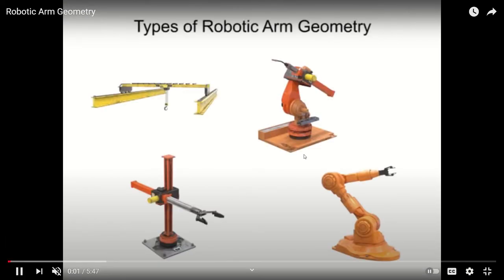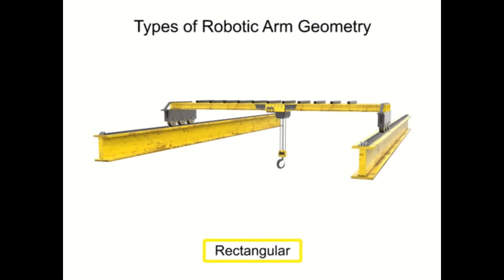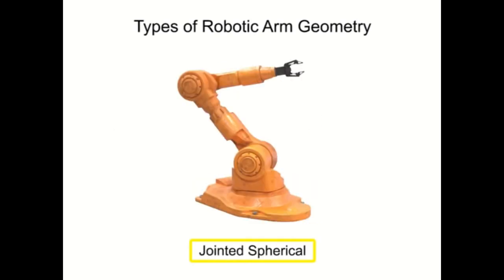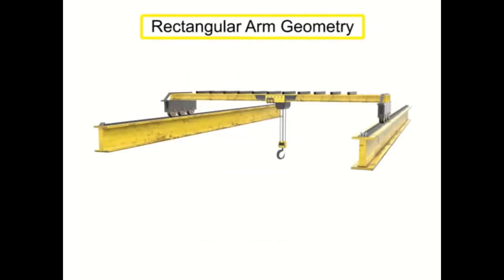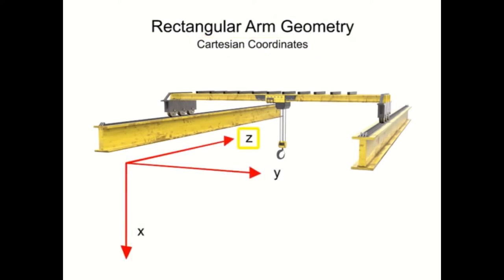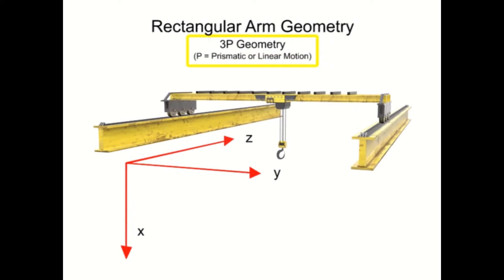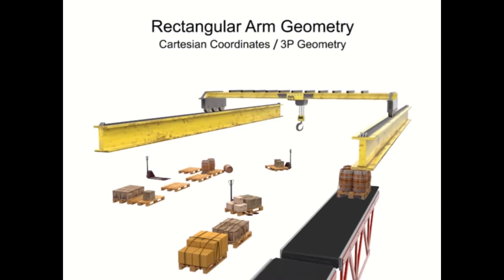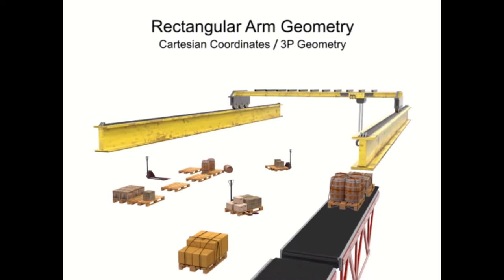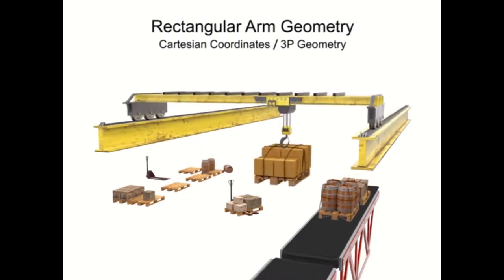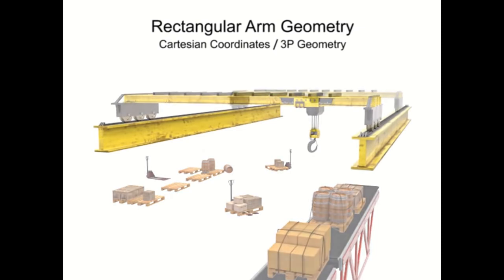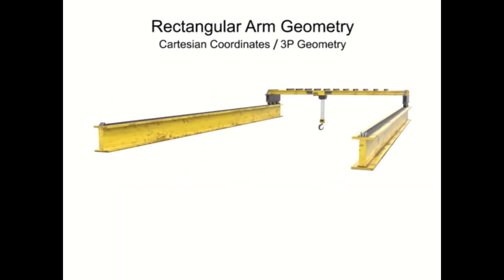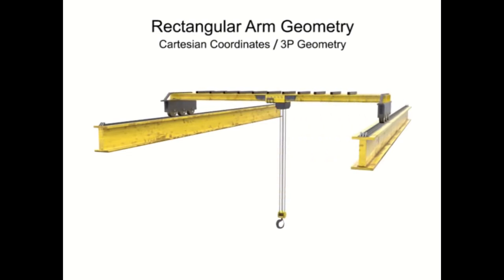Sometimes they call it a robotic arm or manipulator. The types are rectangular, cylindrical, spherical, and jointed spherical or articulate. The first type is the rectangular arm — otherwise known as the Cartesian robot or Cartesian manipulator — because it moves along the Cartesian x, y, and z coordinates. It's also referred to as 3P for prismatic or 3L for linear. The best example is the overhead crane you see in every factory.